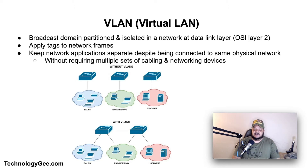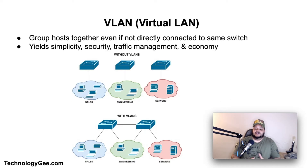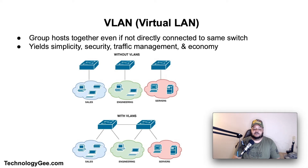VLANs can keep network applications separate despite being connected to the same physical network, without requiring multiple sets of cabling and networking devices to be deployed. VLANs allow network admins to group hosts together even if the hosts are not directly connected to the same network switch. Because VLAN membership can be configured through software, this can greatly simplify network design and deployment. VLANs allow devices that must be kept separate to share the cabling of a physical network yet be prevented from directly interacting with one another.